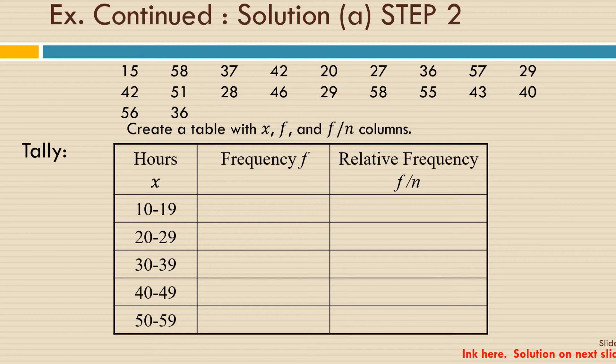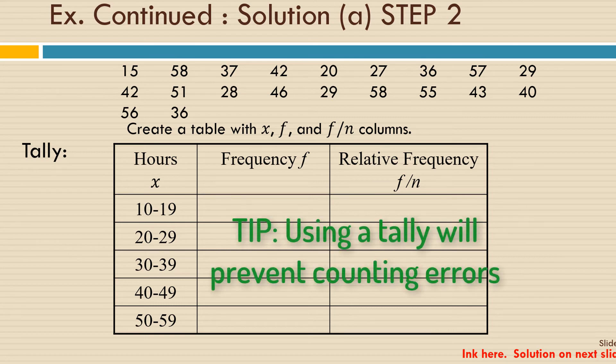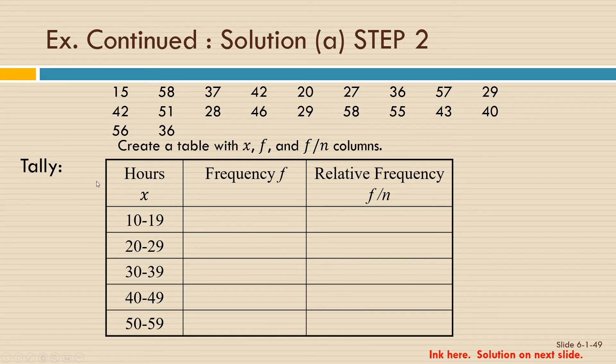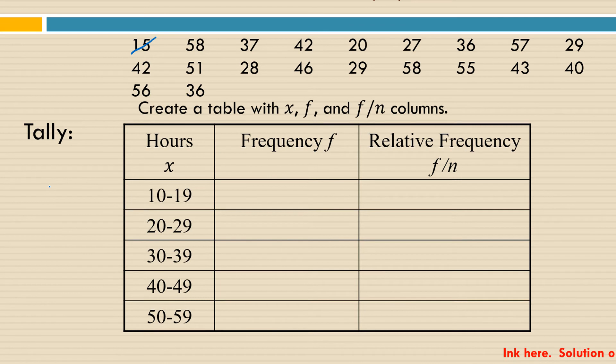So here we go. First, we're going to start by making a tally. Using a tally to determine the frequency of the classes of data values will prevent you from making errors. So in this case, we're going to start by looking at the data value 15. I'm going to cross it off, and I'm going to put a tally mark next to the category from 10 to 19, and I'm going to continue from there. 58 goes in the category 50 to 59, 37 goes in 30 to 39, 42 goes in 40 to 49, 20 goes in 20 to 29, 27 goes in 20 to 29, 36 goes in 30 to 39, 57 goes here, and so on.